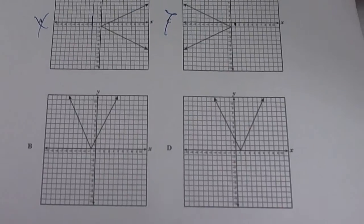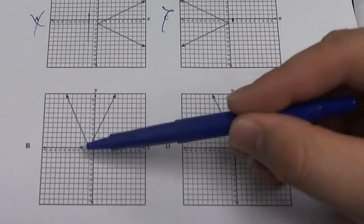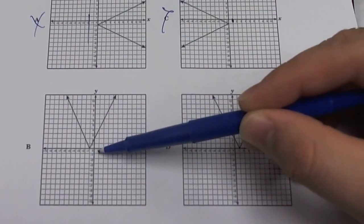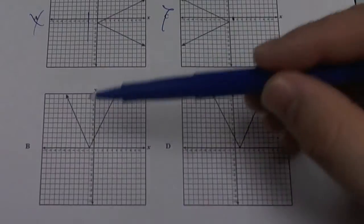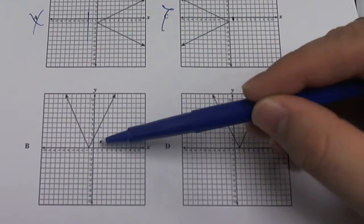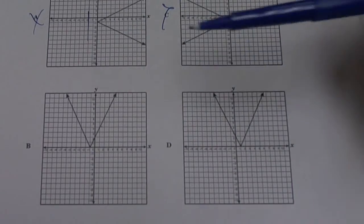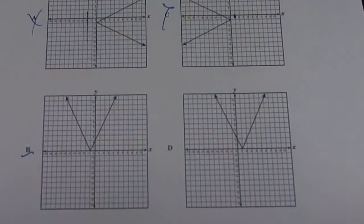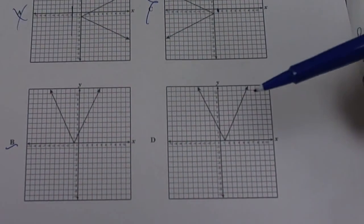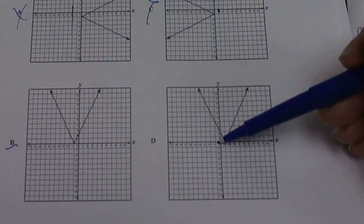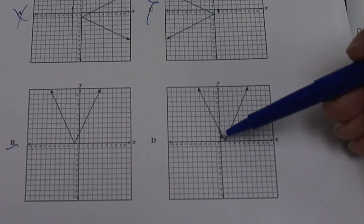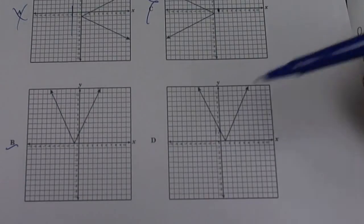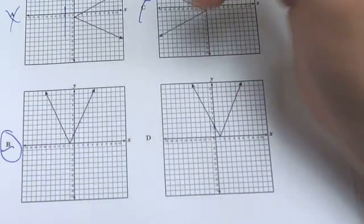The next one, B, you have negative 2 is 2, which looks okay. 1 is 4, looks good. 2 is 6. Alright, so this one is maybe, maybe. This one looks really, really good. I'll look at D. 0 is at 2. Negative 1 is at 0. And this is not it. So it's definitely B.